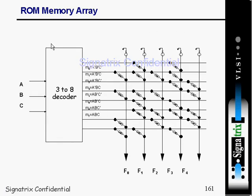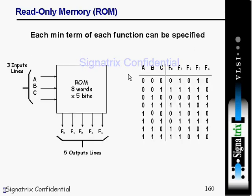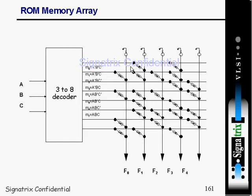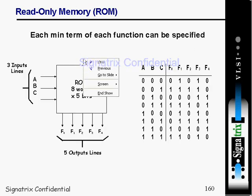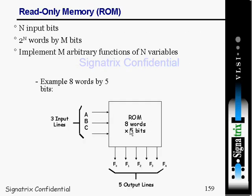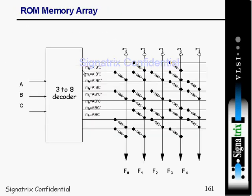Now, looking at the read only memory array — before that we saw the block diagram. Inside it, it looks simply like connections. With three inputs there are eight combinations, obtained with the help of a three-to-eight decoder. The decoder takes three input lines and gives eight outputs. Based on that you program the connections and get outputs f0, f1 — these are the programmable links you can program according to your application.